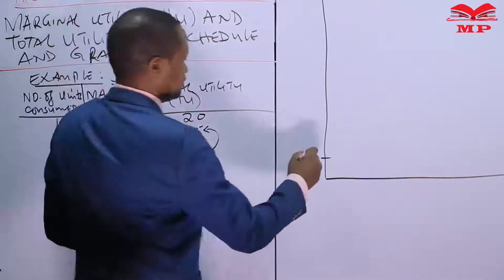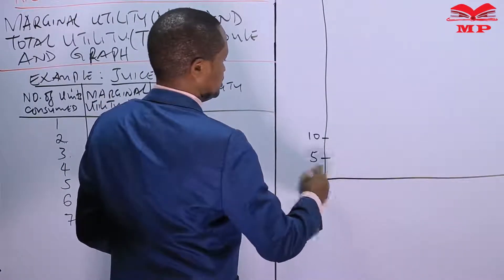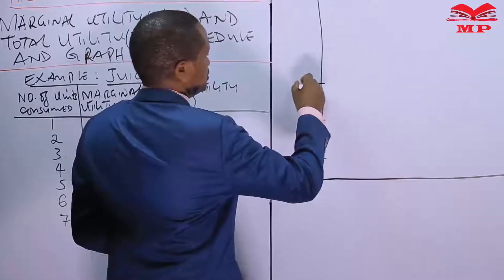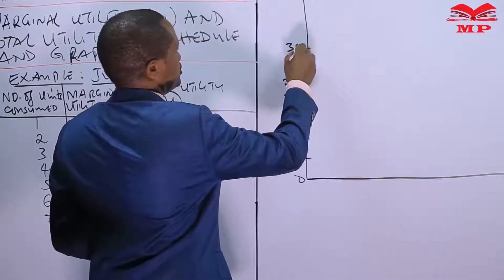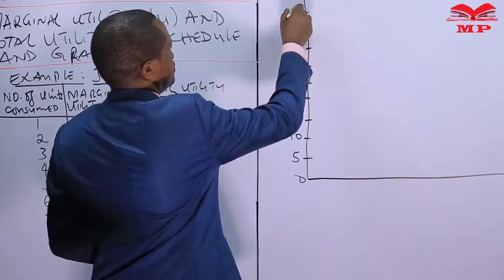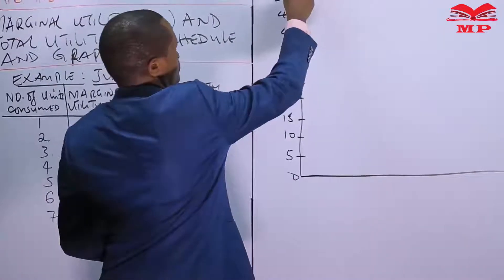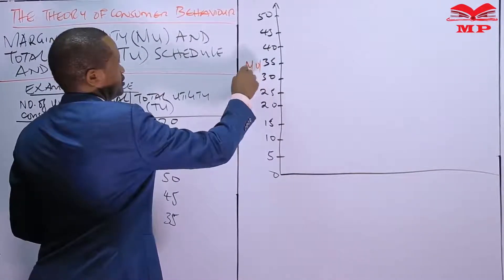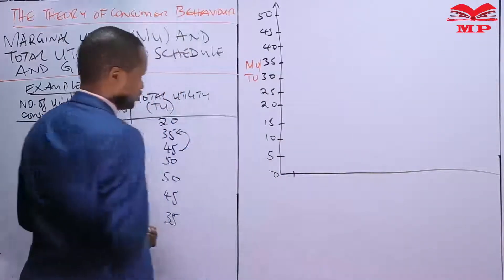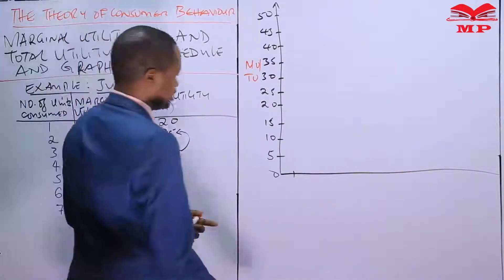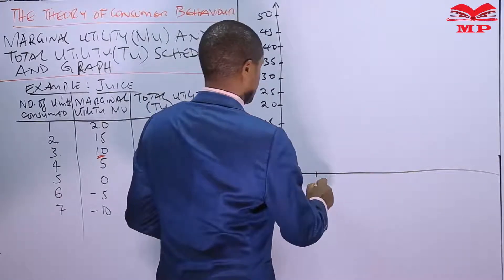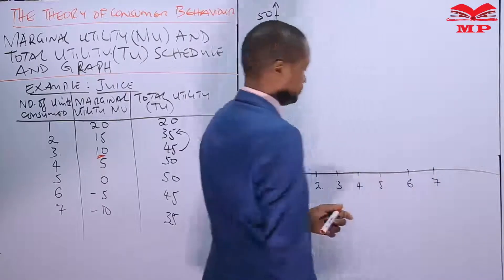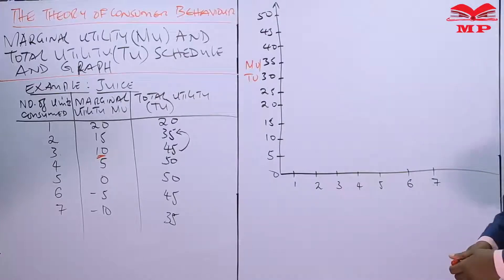On the graph, the y-axis will show the marginal utilities and total utilities, with values from 0 up to 50. The x-axis shows units consumed — the number of glasses — from 1 to 7.